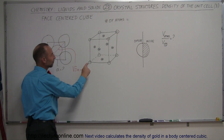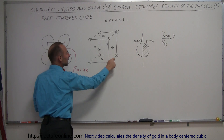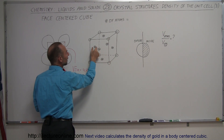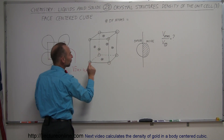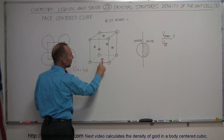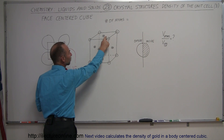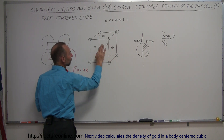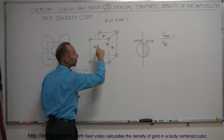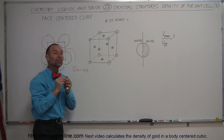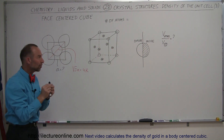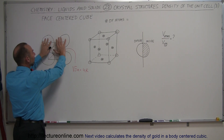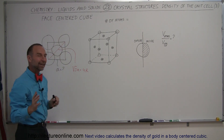We still have atoms at each of the eight corners, but now because we embed an atom in each of the faces — one in the bottom, one at the top, one to the left, one to the right, one in the front, one in the back — that's a total of six faces with six atoms embedded within them, which pushes all the corner atoms a little bit further out.